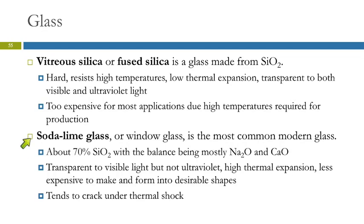Soda lime glass, also called window glass, is the most common modern glass — about 70% silica with the rest mostly Na₂O and calcium oxide. It's transparent to visible light but not ultraviolet, though I wouldn't count on it to protect you from sunburn. It has a high thermal expansion, so when heated it expands significantly. It's less expensive to make and easier to form into shapes, but tends to crack under thermal shock — you don't want to heat it and then set it on a cool surface because it'll probably shatter.